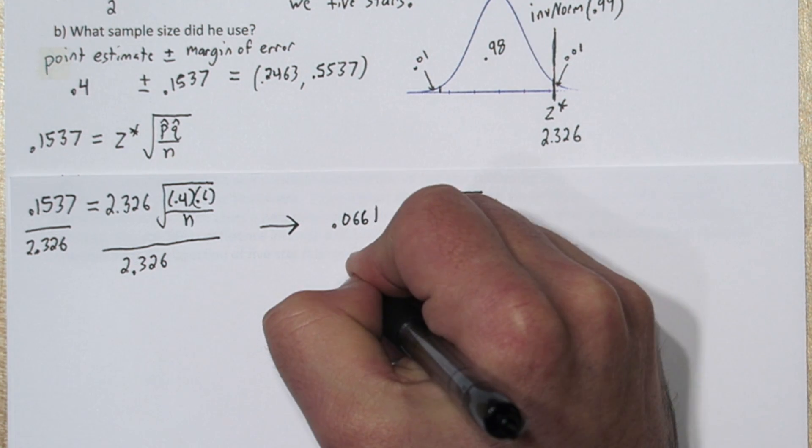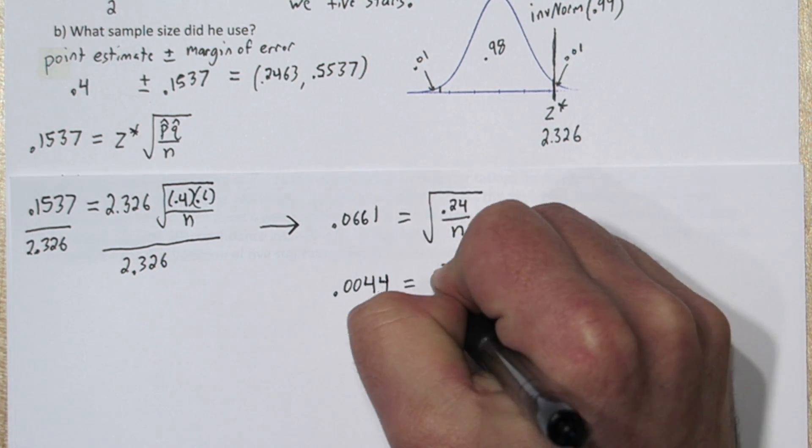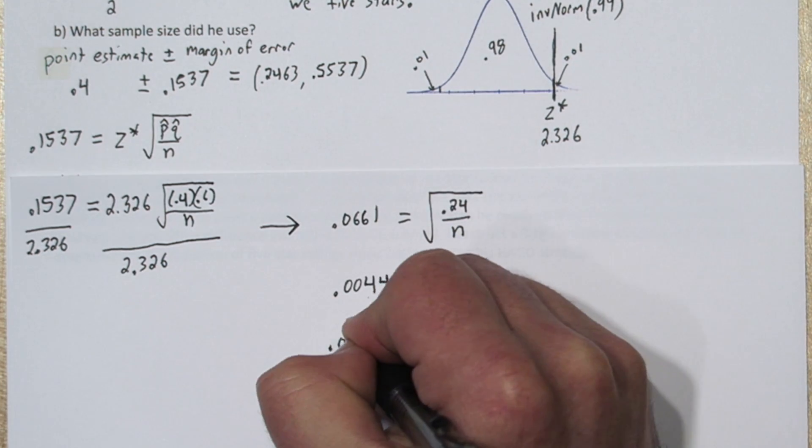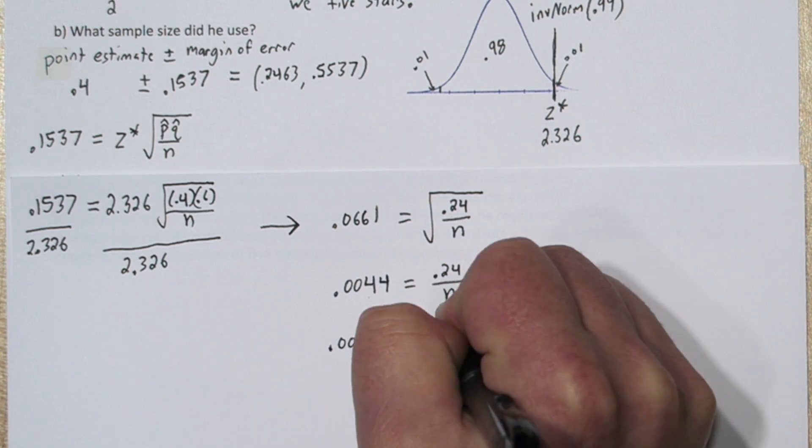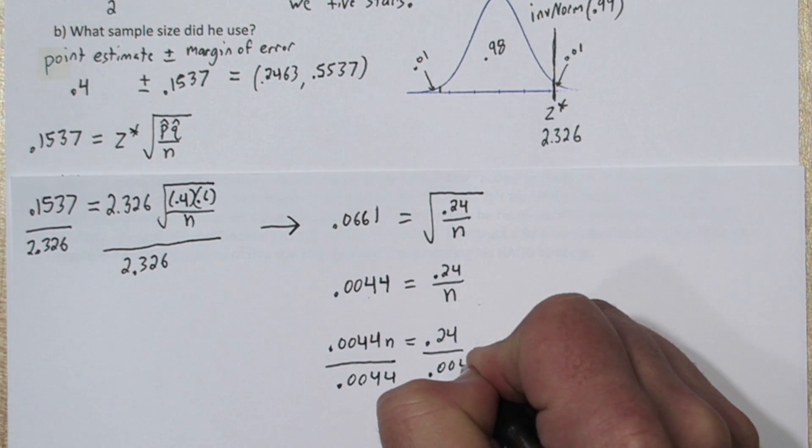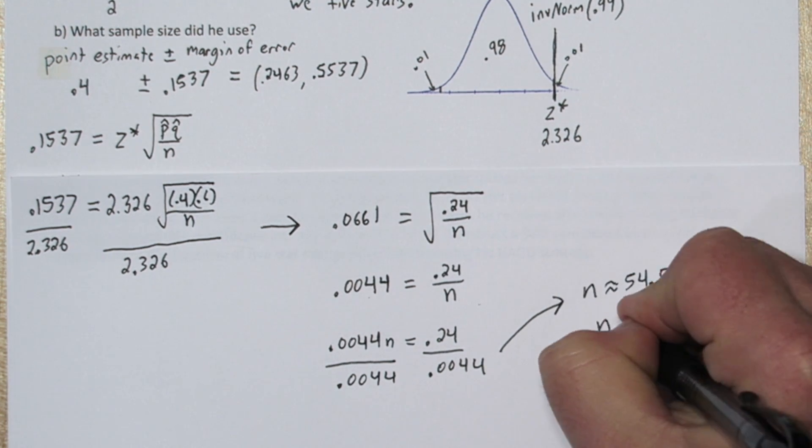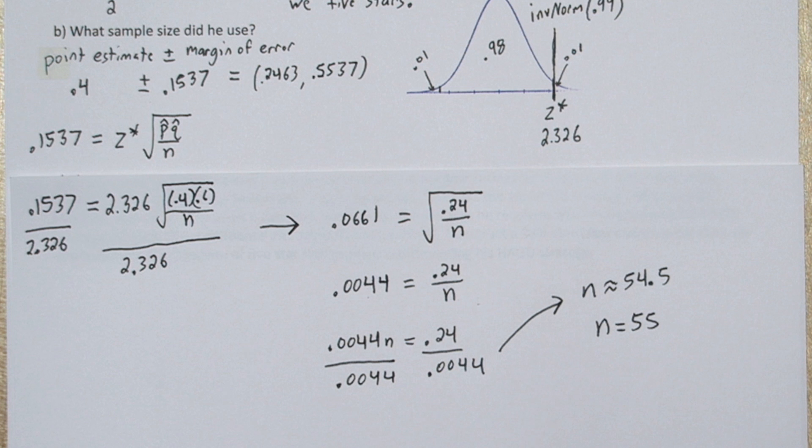Now if we square both sides, we get 0.0044 equals 0.24 over n. Now let's multiply both sides by n. And our last step is just divide both sides by this coefficient, 0.0044. And we end up with n is about 54.5. Now we did a lot of rounding in this problem, so let's go ahead and round this value up to 55. So the representative sample size was 55.